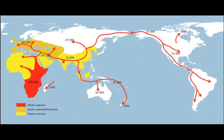Additionally, Denisovan DNA is found in Melanesian peoples. It's thought that the Denisovans inhabited Central Asia and possibly down into South Asia. This is interesting but somewhat irrelevant, because no one — at least that I've seen — is arguing for a Central, Southern Asian, or Melanesian origin of modern humans.